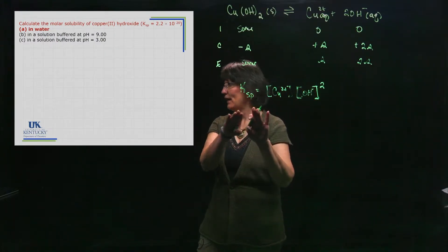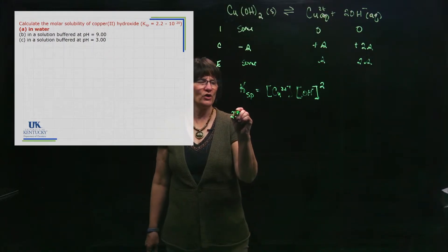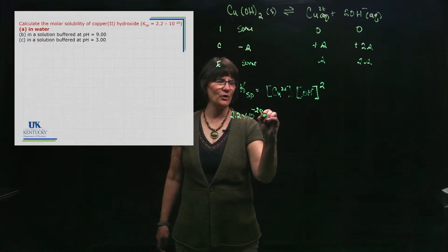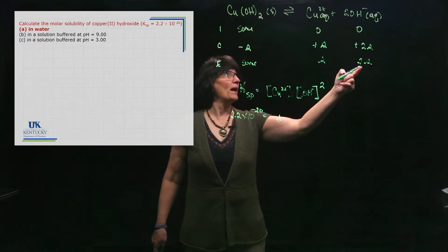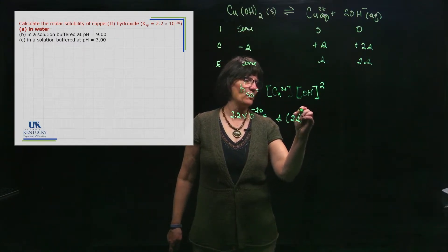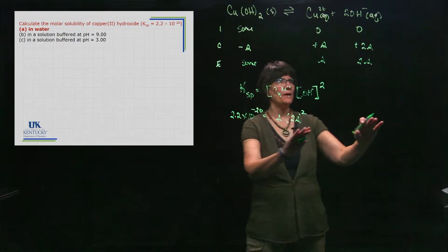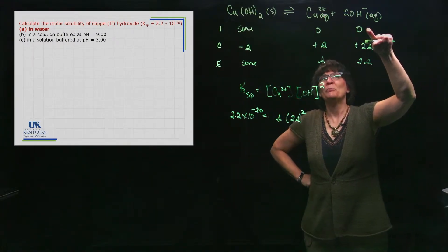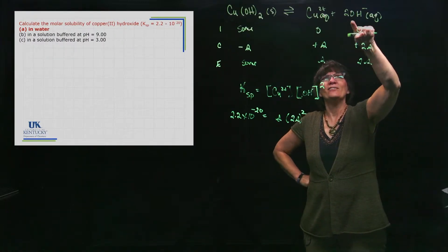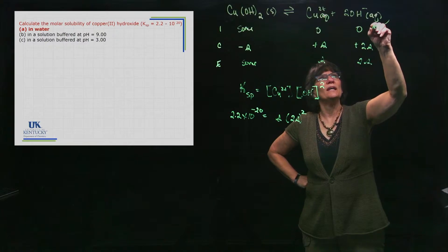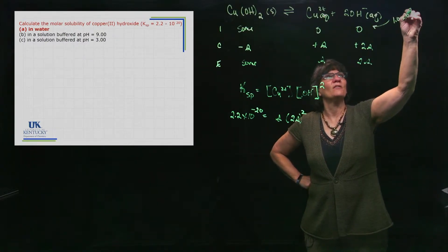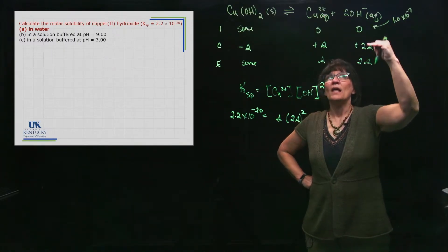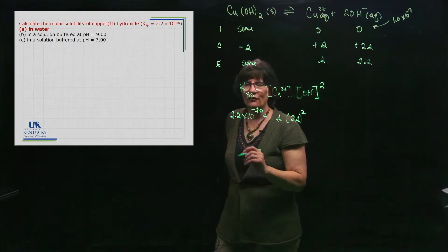We took our KSP value. Our KSP value was 2.2 times 10 to the minus 20. That's a very tiny value. My copper was s and my hydroxide was 2s, and that was squared. Now let's go back up here. Is this really zero? We often put a zero there, but this is sitting in water, so what this really is is 1 times 10 to the minus 7. What we're assuming is that that is so small that we can ignore that there's any at all. Let's see if this really works when we solve for s.